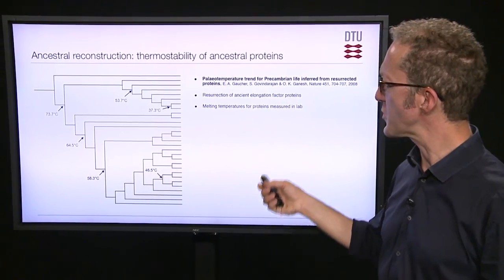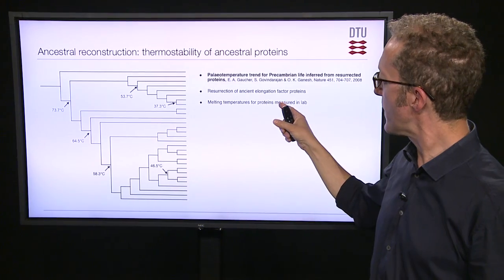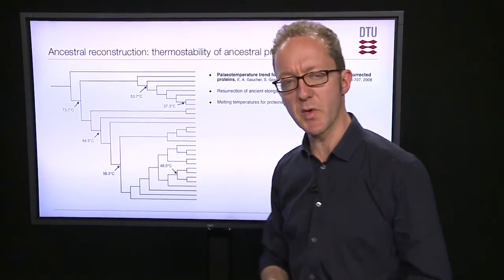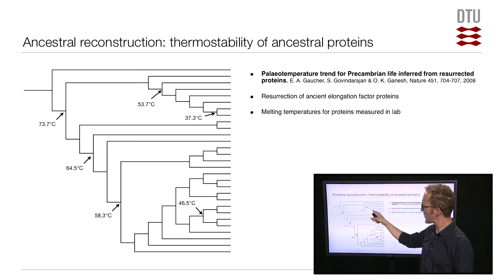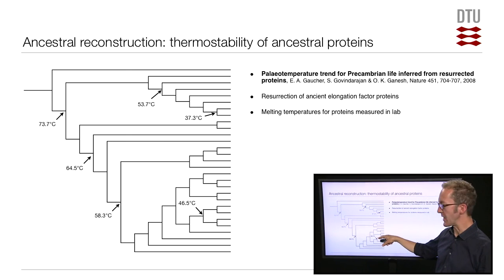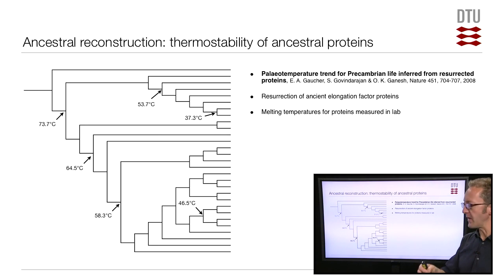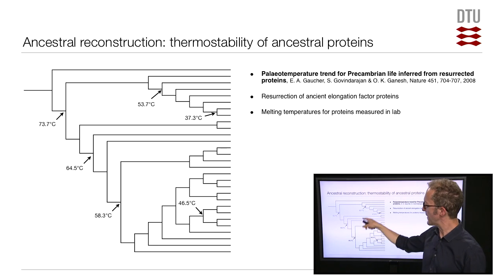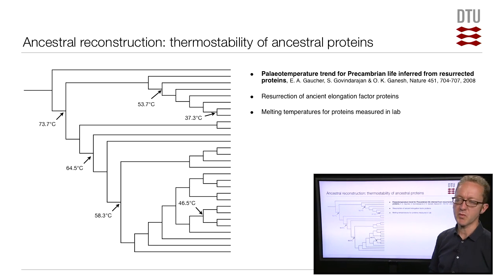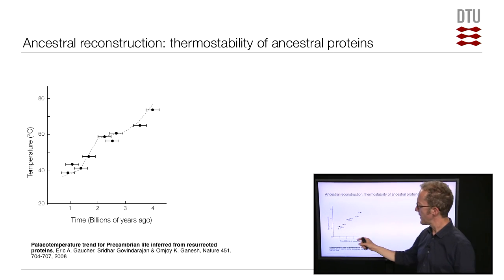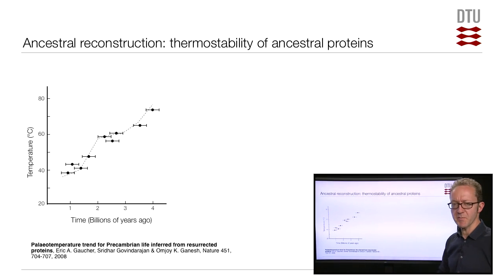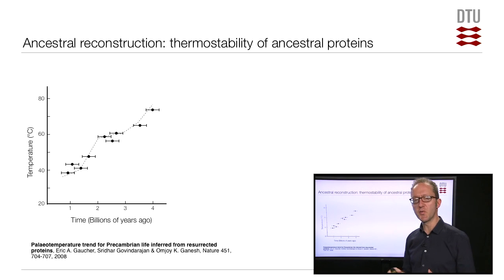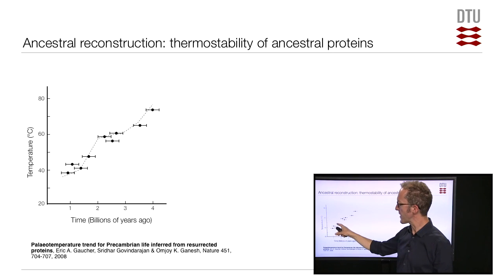Another fun example of ancestral reconstruction is the reconstruction of certain elongation factors, done for a range of ancestors corresponding to different time points going back to the common ancestor. From each of this large range of ancestral sequences, they reconstructed the elongation factor, expressed it, purified it, and then did various measurements including the melting temperature — the temperature at which the protein unfolds.